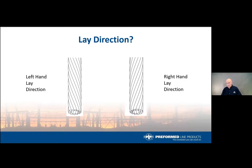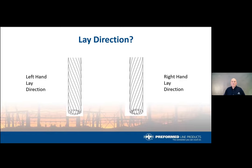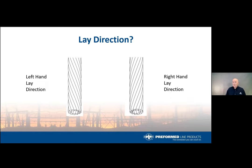Lay direction is so important it warrants two slides. A counterclockwise wrapping is left-hand lay, typically found on strand products. A clockwise twist is right-hand lay, common on aluminum-based conductors in the US. To visualize: hold the cable in your left hand moving away from you — the strands start from the right side of the cable at the thumb and wrap up over the top to the left toward the fingers. Matching lay direction is critical; when someone requests a product, I often ask for a photo of the cable to confirm the lay direction.